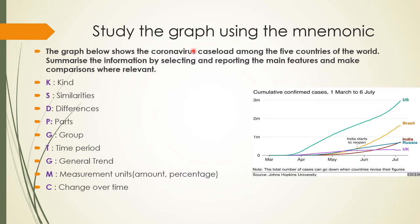The question says: study the graph using the mnemonic, so I will be studying this graph using the mnemonic I discussed in Part 1. If you haven't seen Part 1, go and watch that for the mnemonic. The graph below shows the coronavirus caseload among the five countries of the world. Summarize the information by selecting and reporting the main features and make comparisons where relevant.